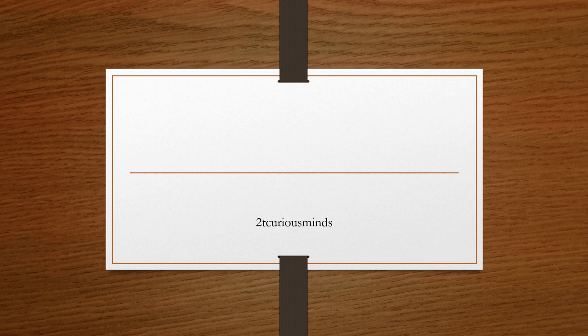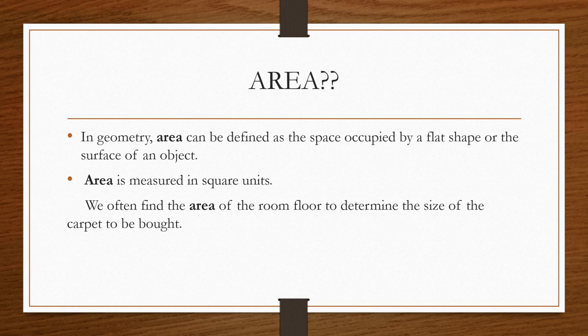Hi all, welcome to 2 Curious Minds. In this session, we'll see what is an area. So in geometry, area can be defined as the space that is occupied by a flat shape or any two-dimensional figure. It can also be explained as a surface of an object.